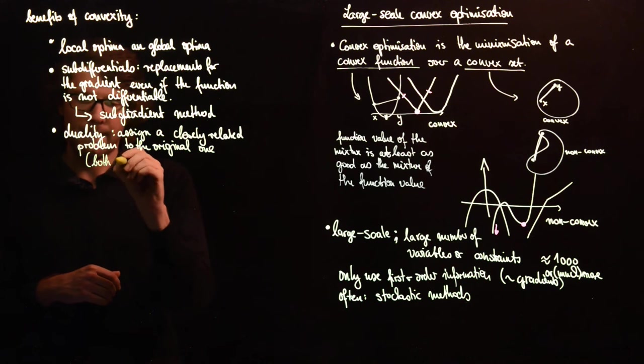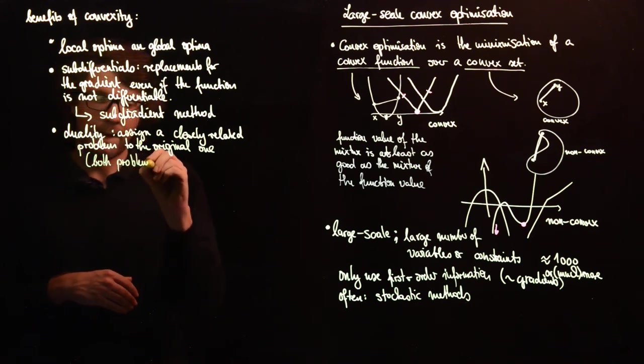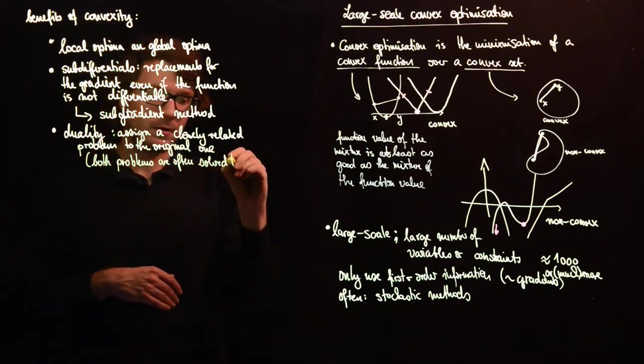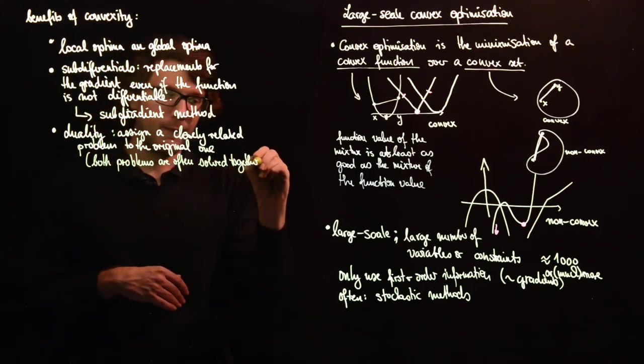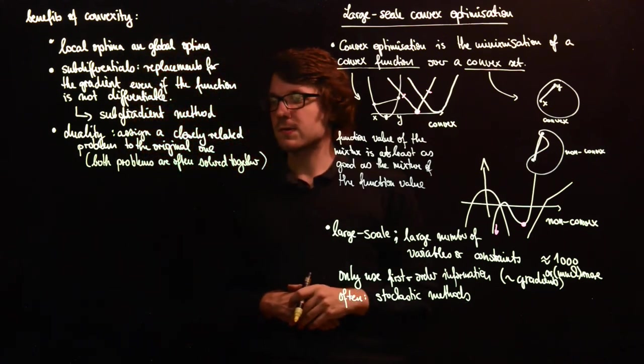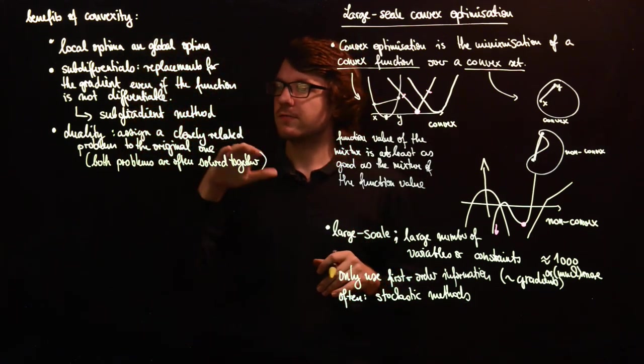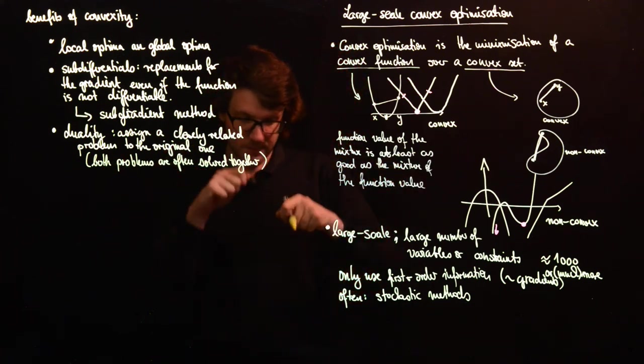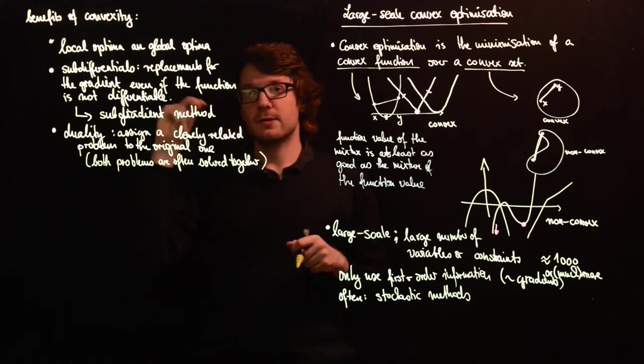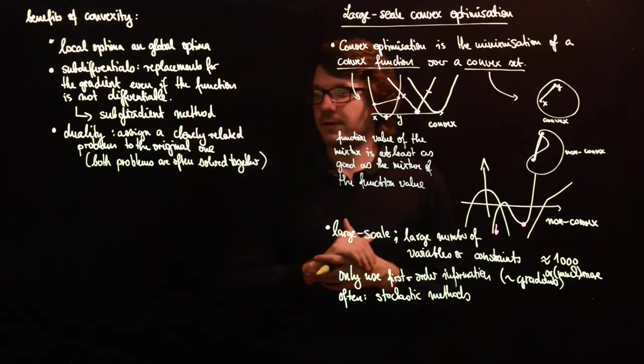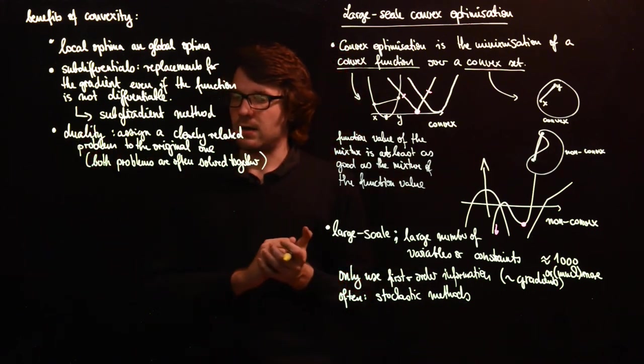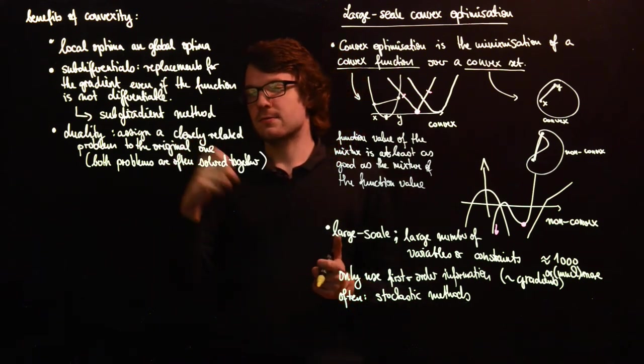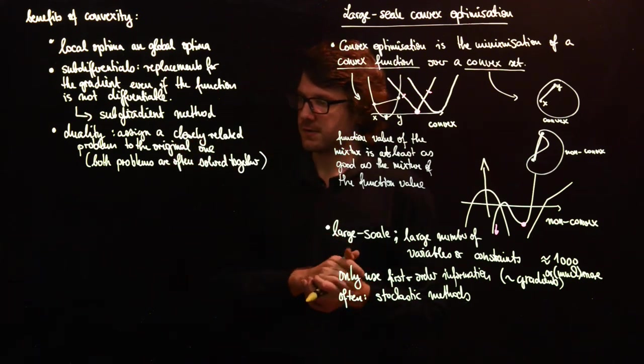And very often these things are solved together in a lot of methods. Both problems are often solved together. And we will also see the meaning of the solution of the dual problem. This has to do with if you perturb your original problem, how does your optimum change? And this is also some very important insight into the structure of convex optimization problems.